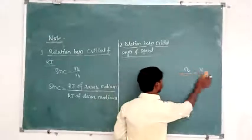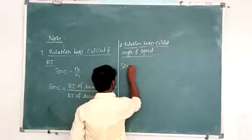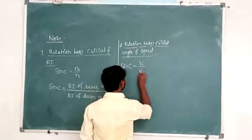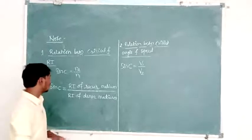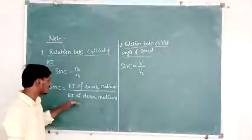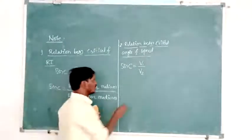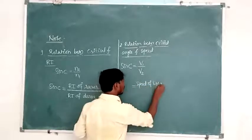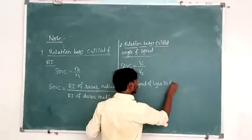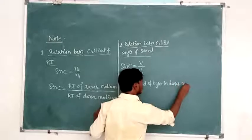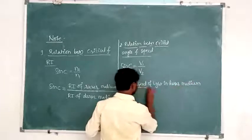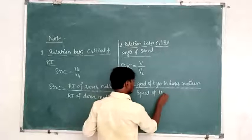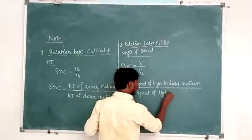So I will write this equation as: sin C is equal to V1 by V2, where V1 is the speed of light in the denser medium — the first medium — and V2 is the speed of light in the rarer medium — the second medium.